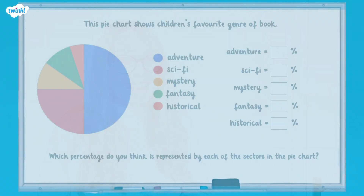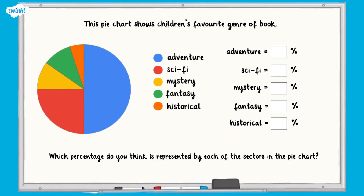How did you get on? You should have spotted that the blue sector is half of the circle, so represents 50%, and the red sector is a quarter of the circle, so represents 25%. The yellow and green sectors are the same size and are both about twice the size of the orange sector, so 10% is a good estimate for those. That leaves the orange sector as 5%.